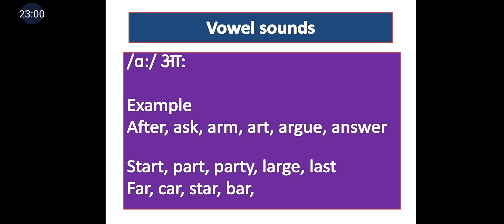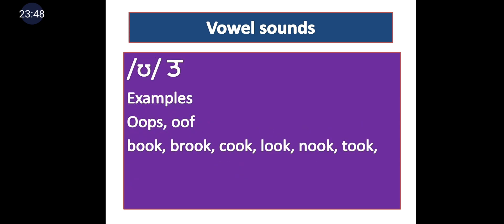Long A — /ɑː/ — uses the small-letter A with a colon in the slant bar. Examples initially: after, ask, arm, at, argue, answer — not 'answer' but 'ɑːnsər.' Medially: start, part, party, large, last. Finally: far, car, star, bar — we wrongly pronounce the R in these words, but the correct pronunciation drops the R: 'fɑː,' 'kɑː,' 'stɑː,' 'bɑː.' R sound is not pronounced when it appears finally.